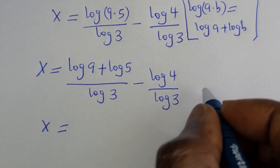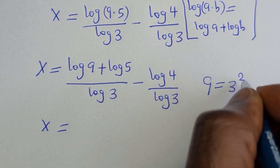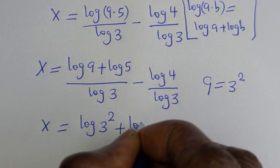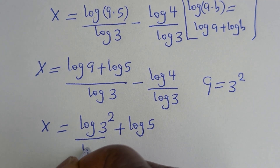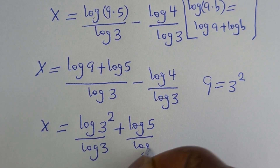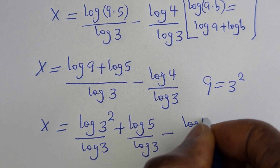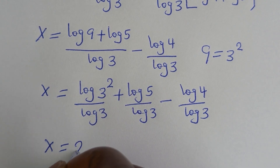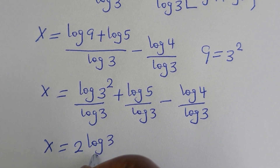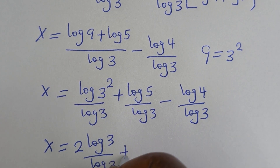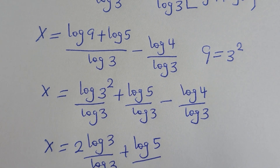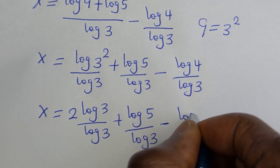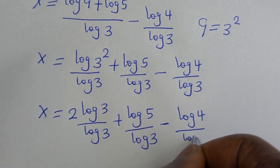S is equal to log 9 plus log 5, over log 3, minus log 4 over log 3. Now 9 can be written as 3 squared, so we have log 3 squared plus log 5, all over log 3, minus log 4 over log 3. S is equal to 2.